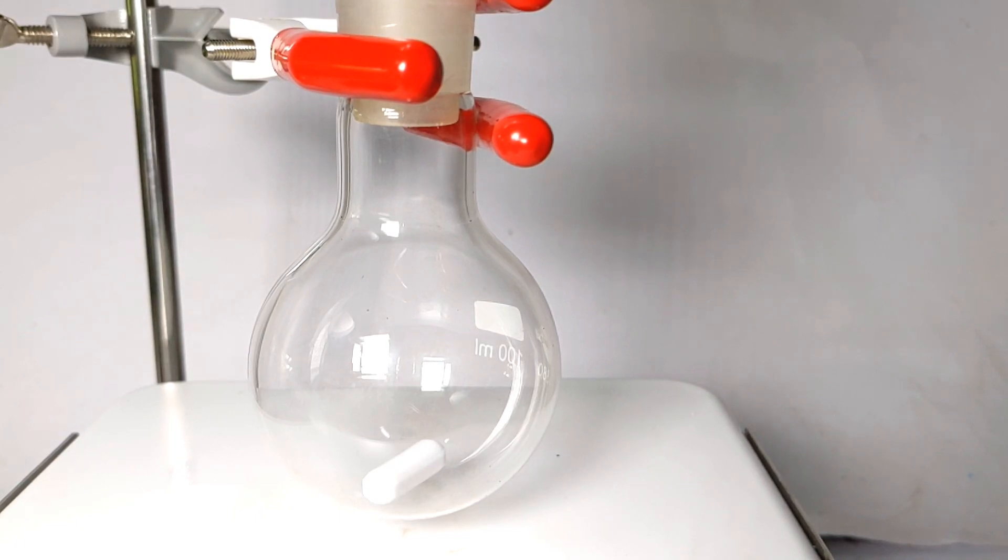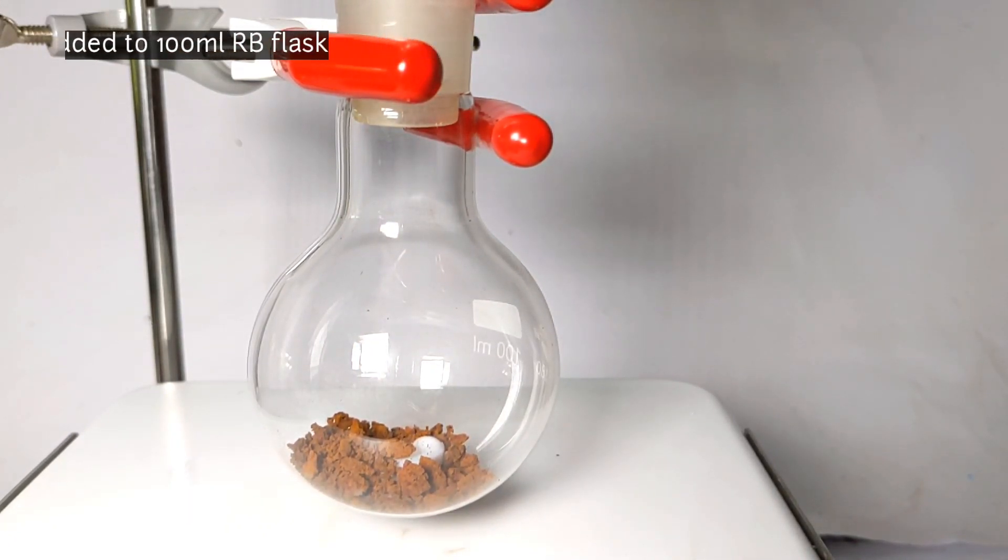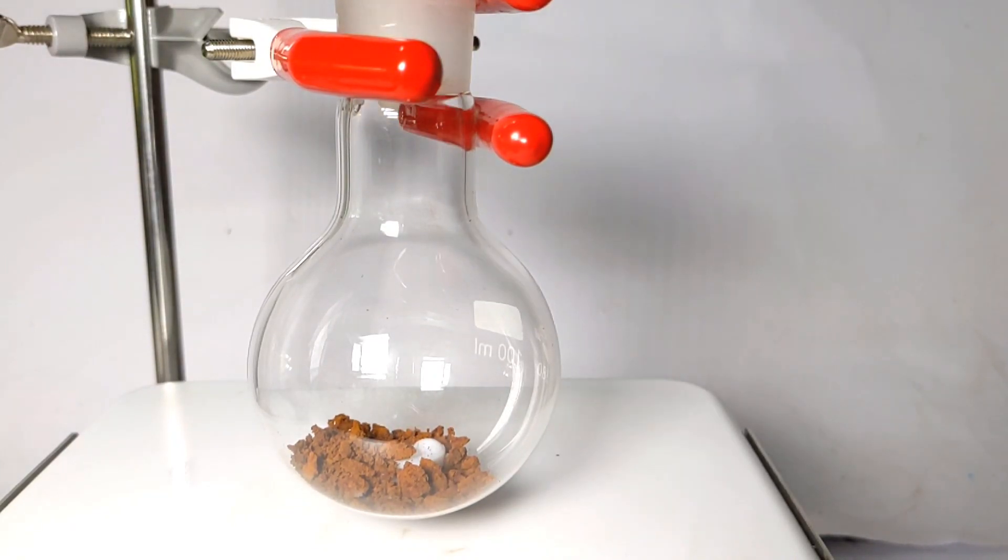Start by fixing a 100 milliliter round bottom flask on a magnetic stirrer with a stirring bar inside. Now add 5 grams of pre-weighed fluorescein to the flask. Fluorescein was synthesized in one of my previous videos; the link to that is given in the description.